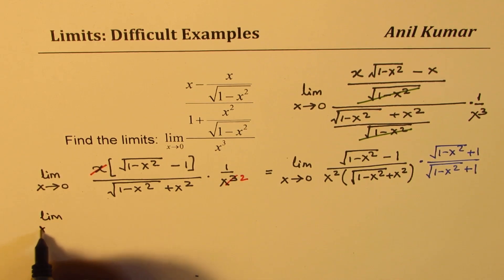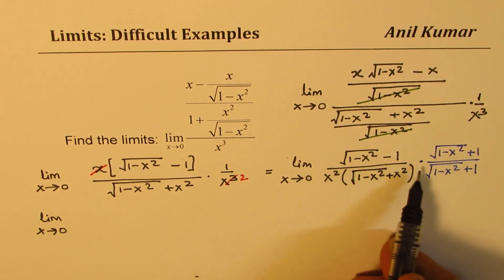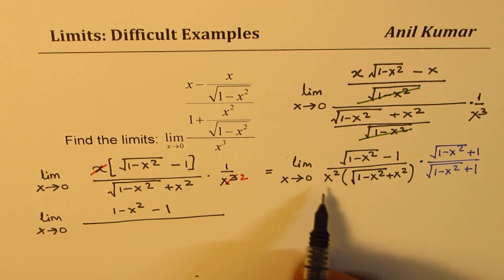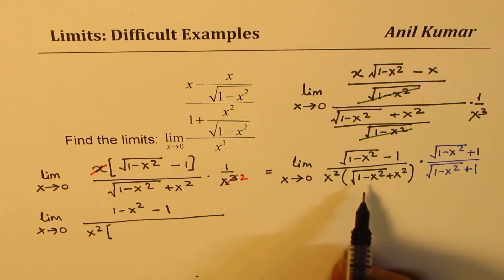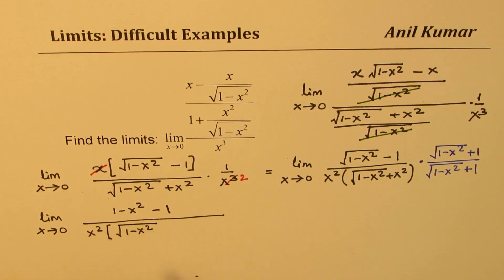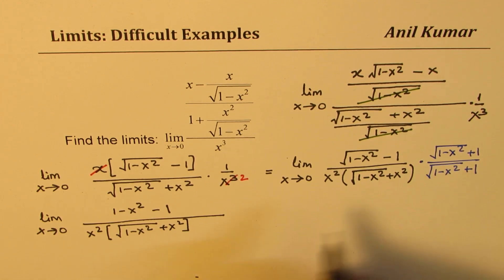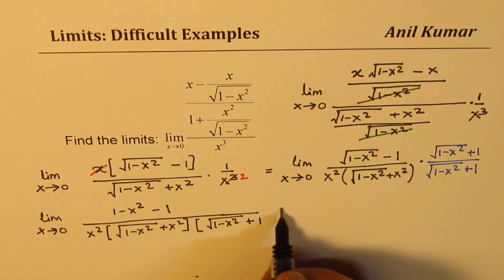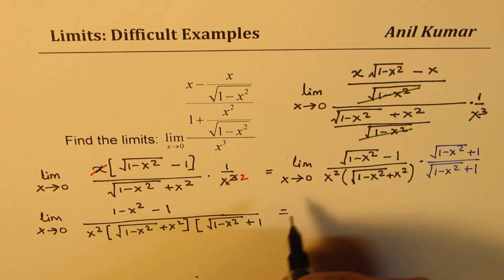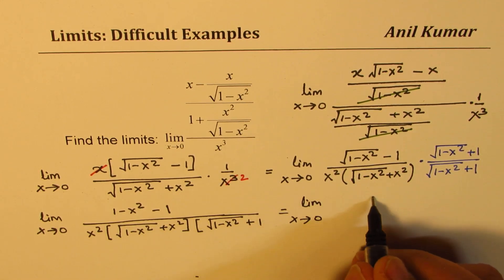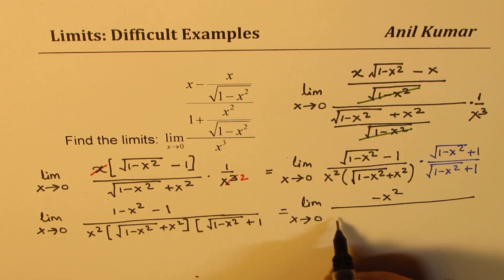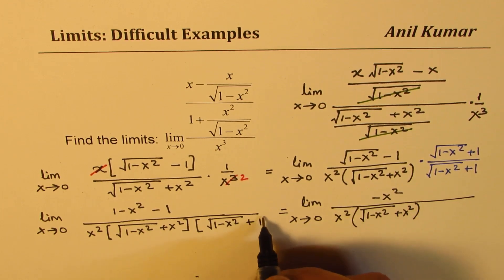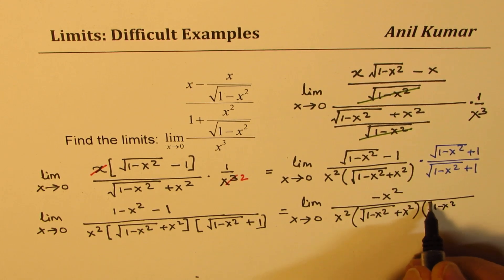This rationalization is done whenever we have square root functions. So we get the limit as x approaches 0. The numerator becomes a difference of squares: 1 minus x squared minus 1. The denominator is x squared times the quantity square root of 1 minus x squared plus x squared, times the conjugate factor square root of 1 minus x squared plus 1. In the numerator, 1 minus 1 is 0, leaving minus x squared.